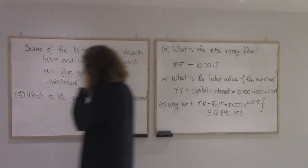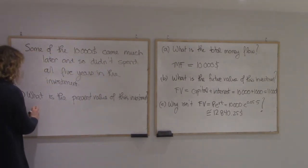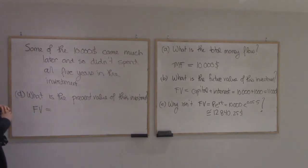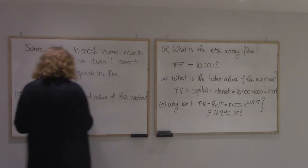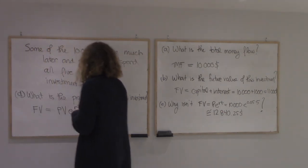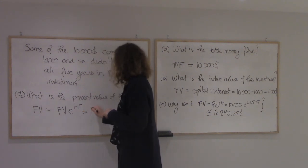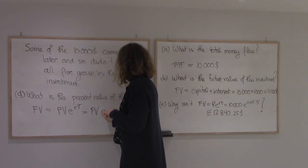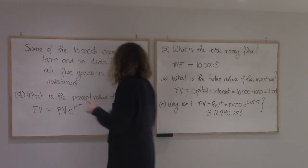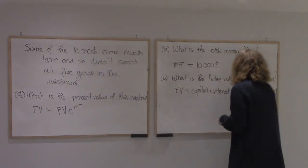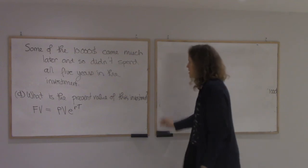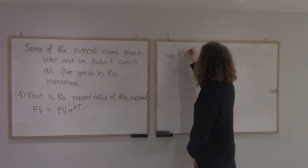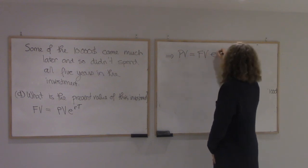So the future value would be equal to what I would get if I took the present value and invested it for five years. I'll solve for PV here. And so that means PV is FV times e to the minus RT.